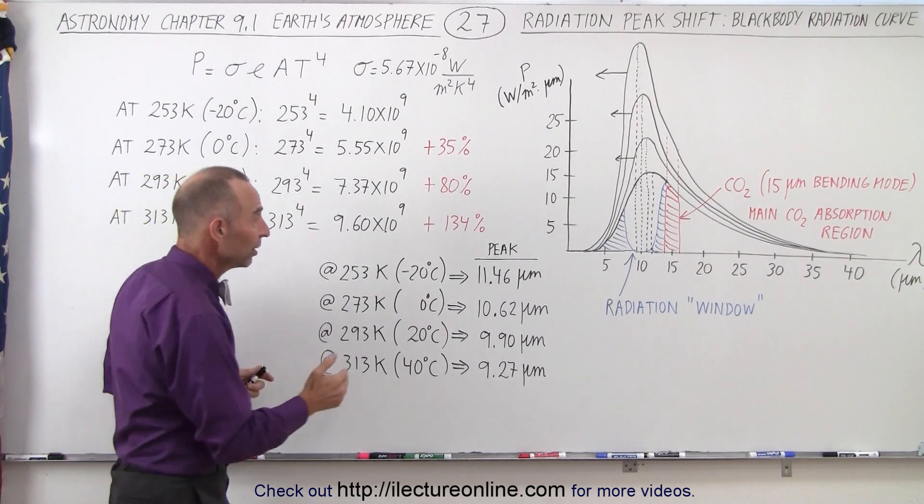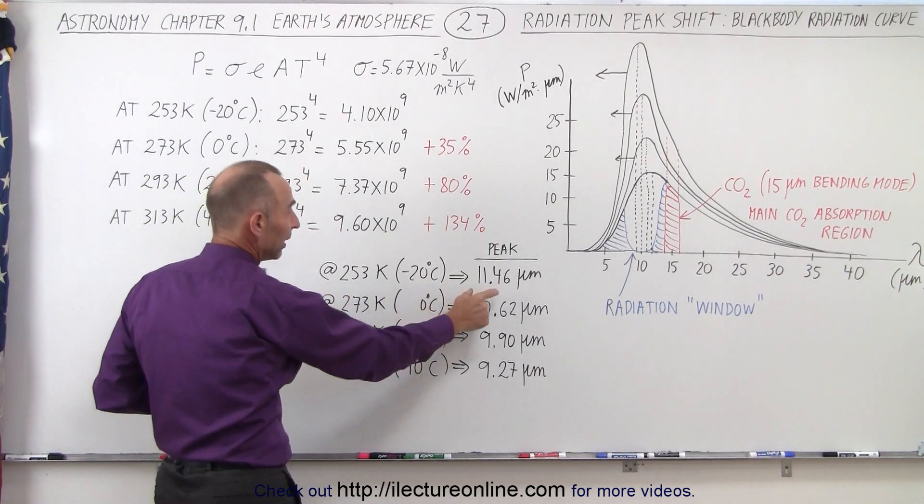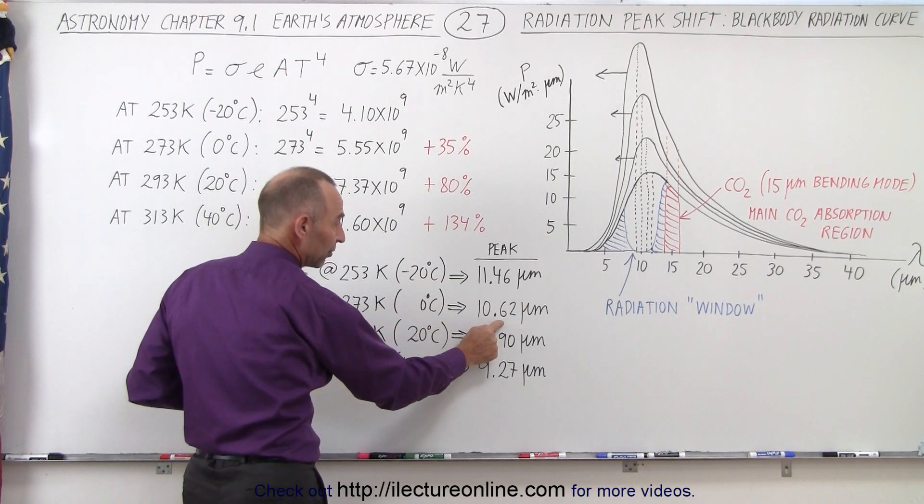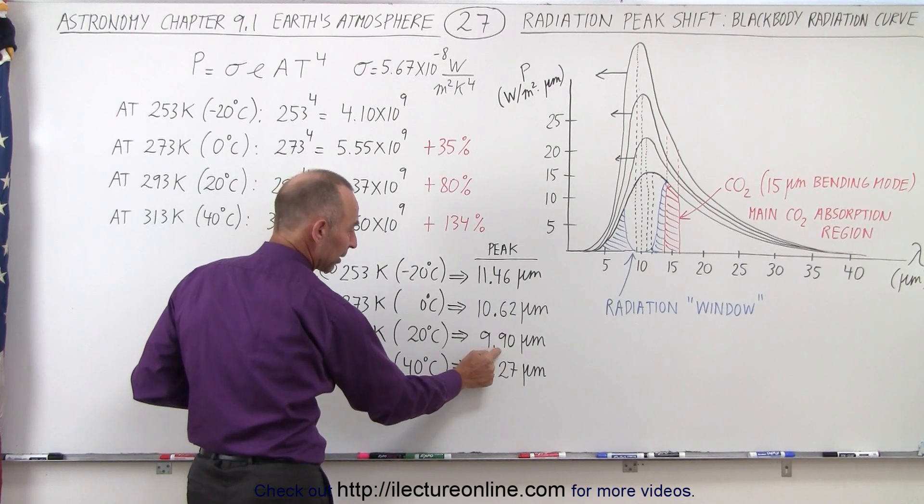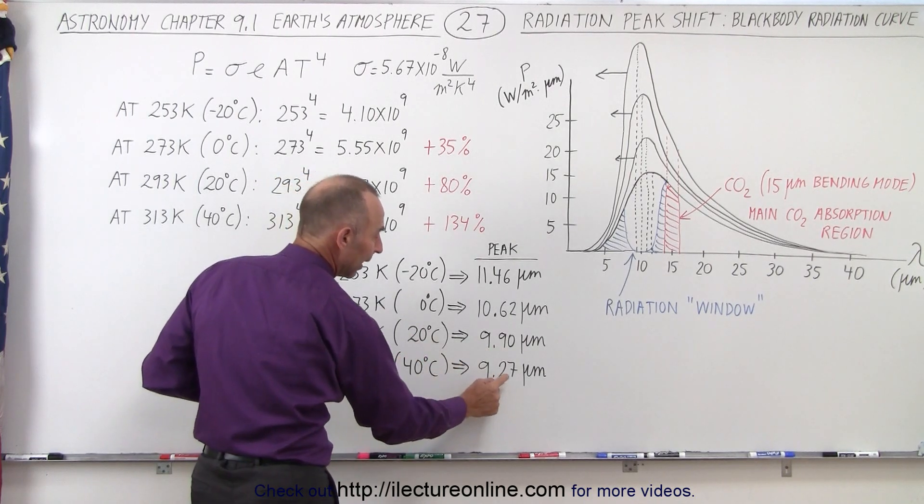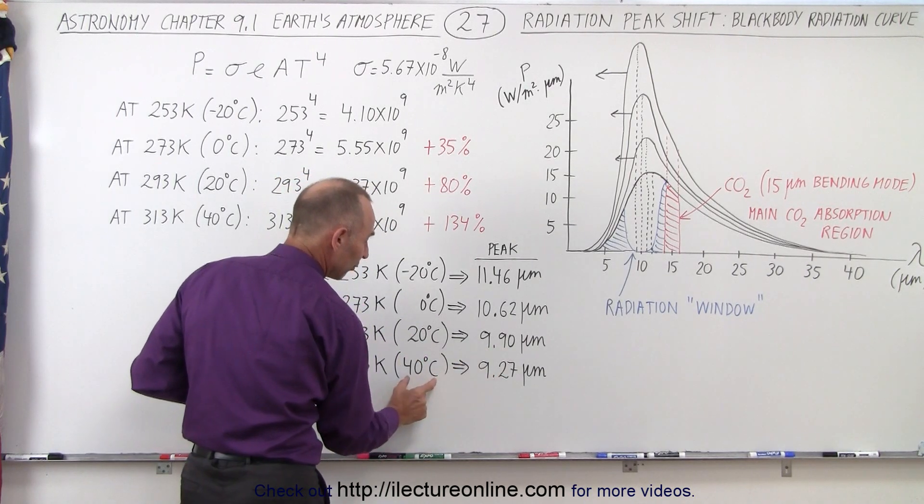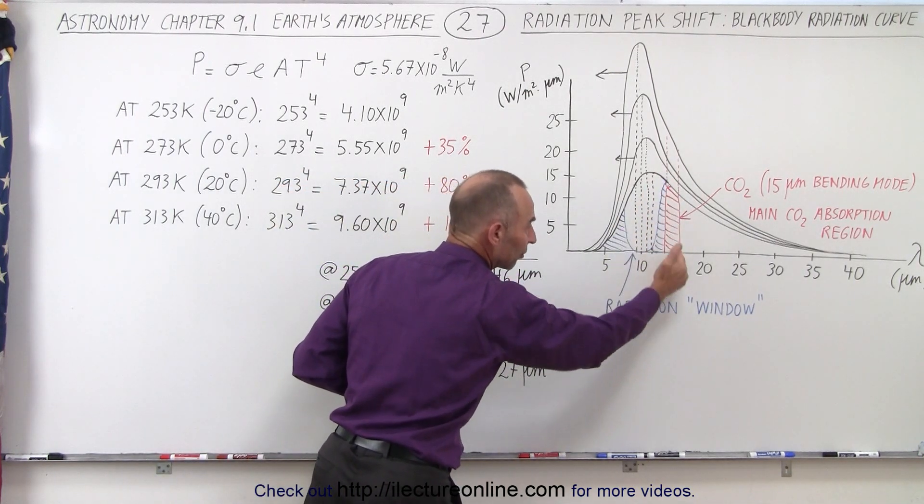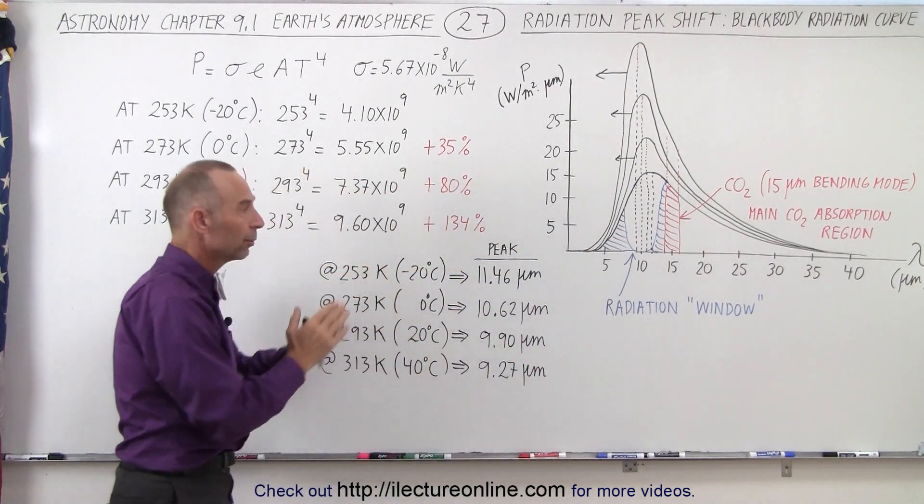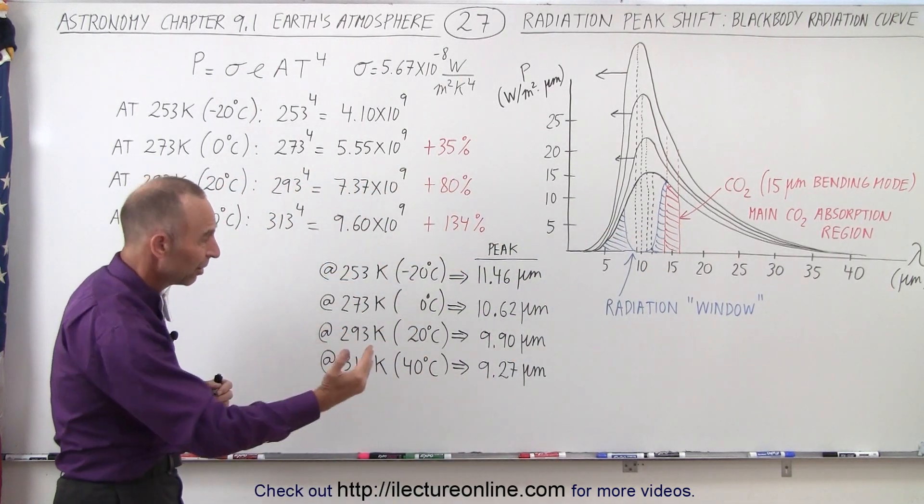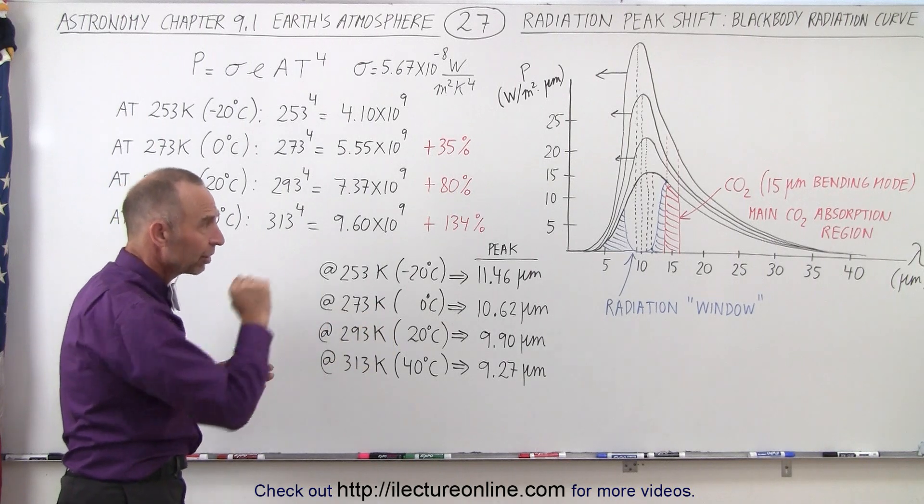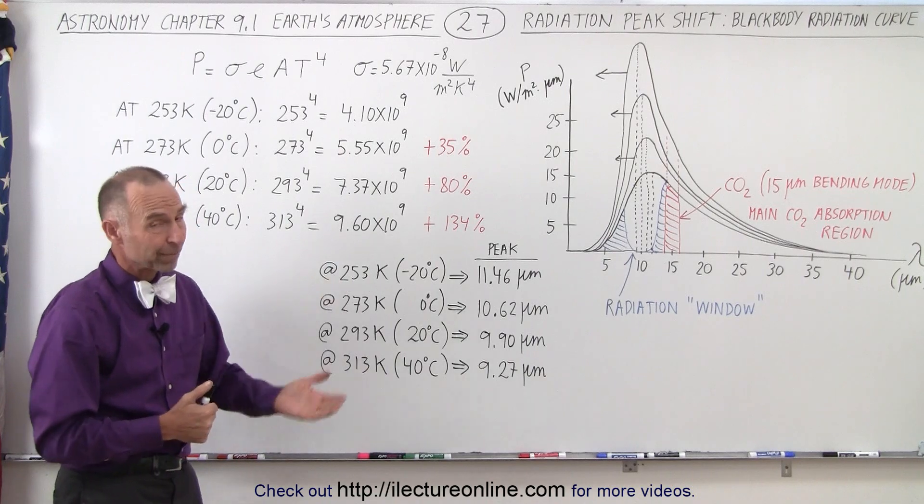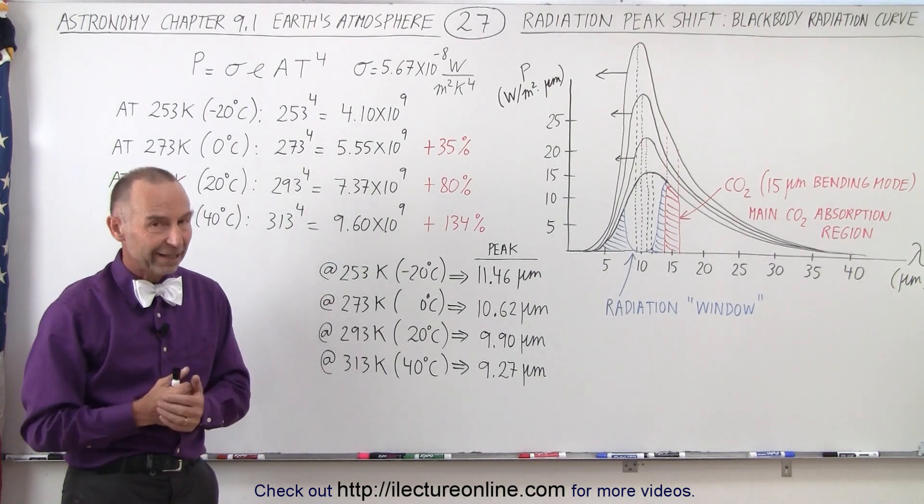Now notice you can see here where the radiation peaks are at the various temperatures. It's about 11.46 micrometers at minus 20, 10.62 micrometers at zero degrees centigrade, 9.9 micrometers at 20 degrees centigrade, and 9.27 micrometers at 40 degrees centigrade, and realizing that that carbon dioxide band kind of straddles the 15 micrometer region, about from 14 to 16 micrometers. So again, the shift to the left causes that to have less effect when the temperatures increase quite a bit on the surface. And that's how the earth regulates its temperature.